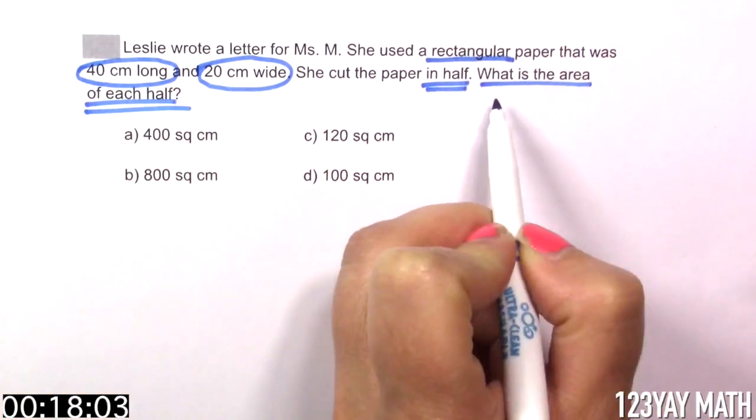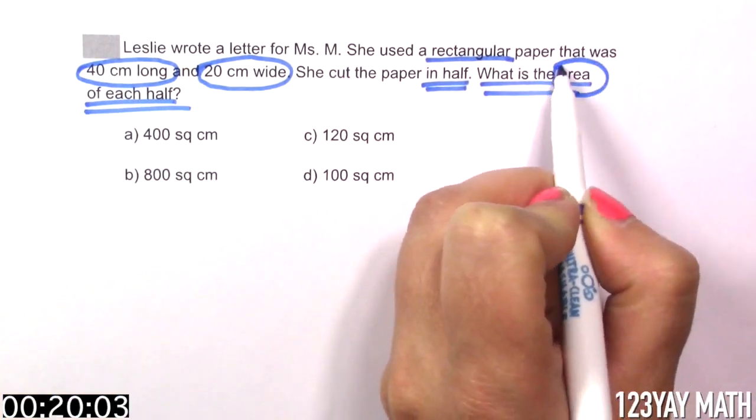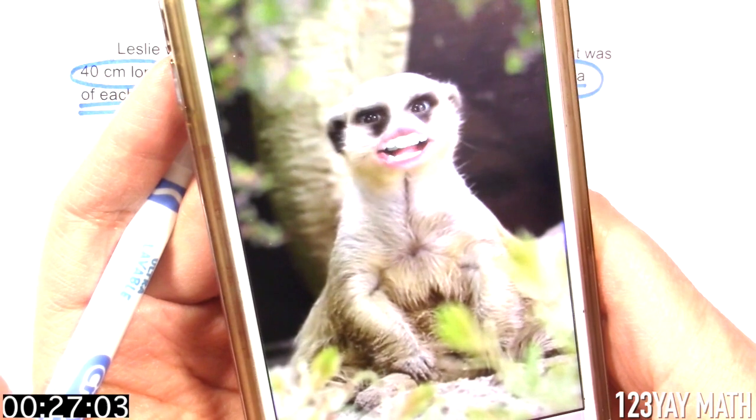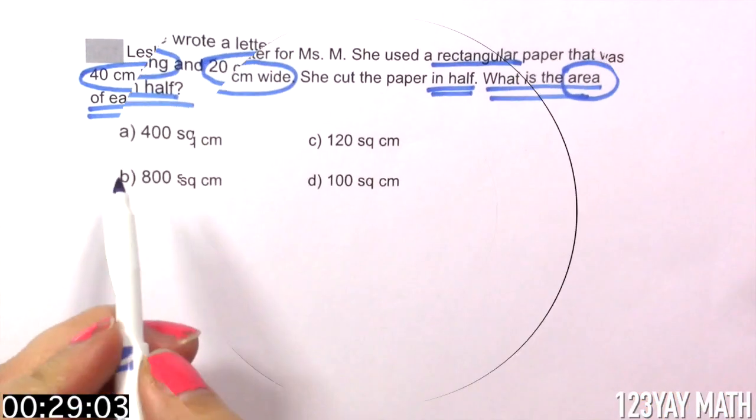So we need to figure out the area of each one of the halves. What do we do next? Draw a model. Let's draw a model.